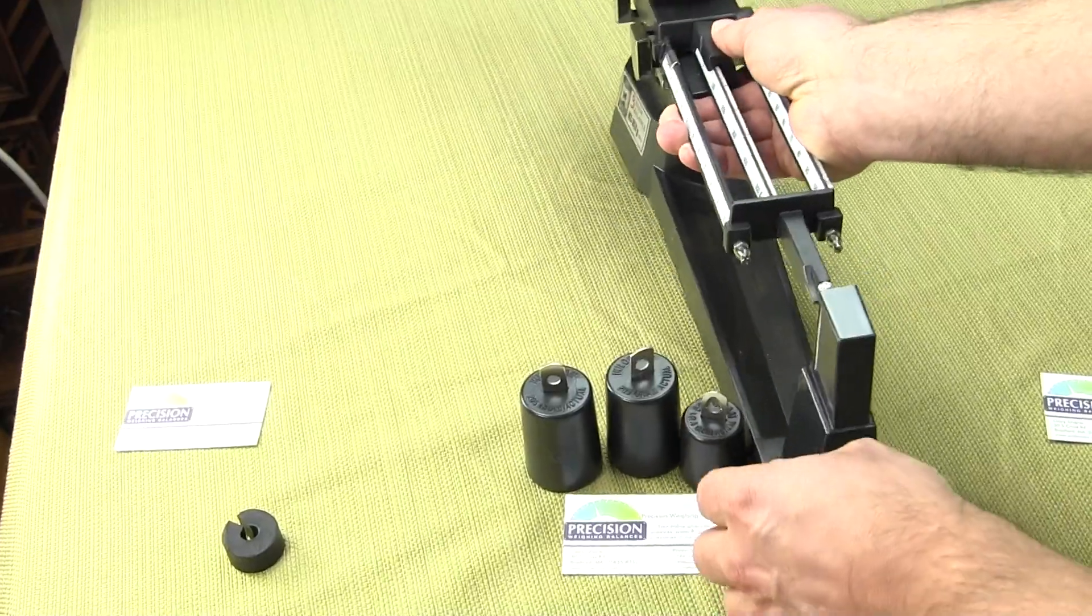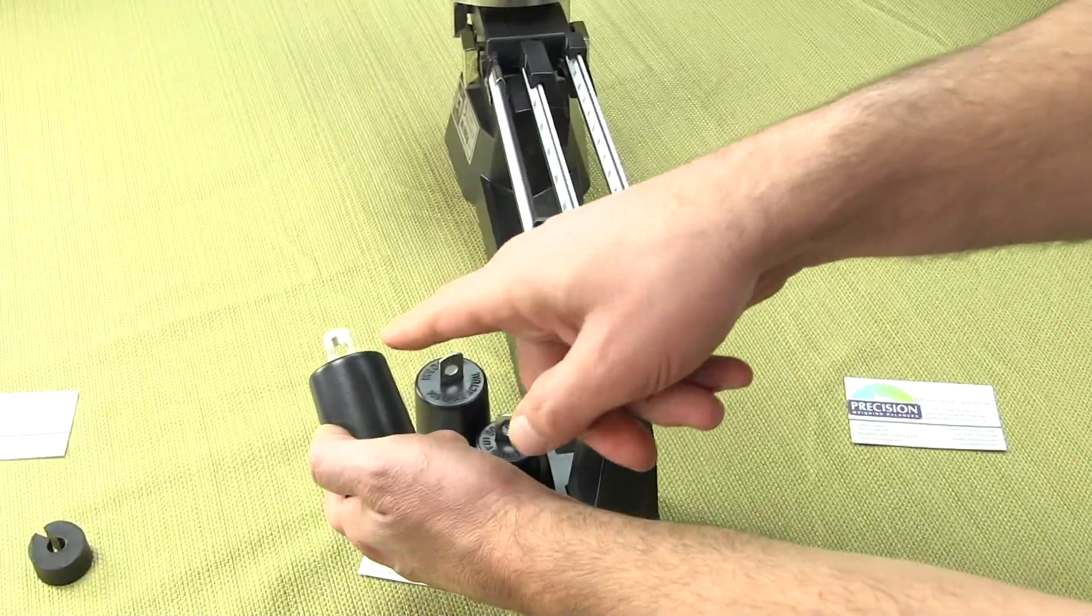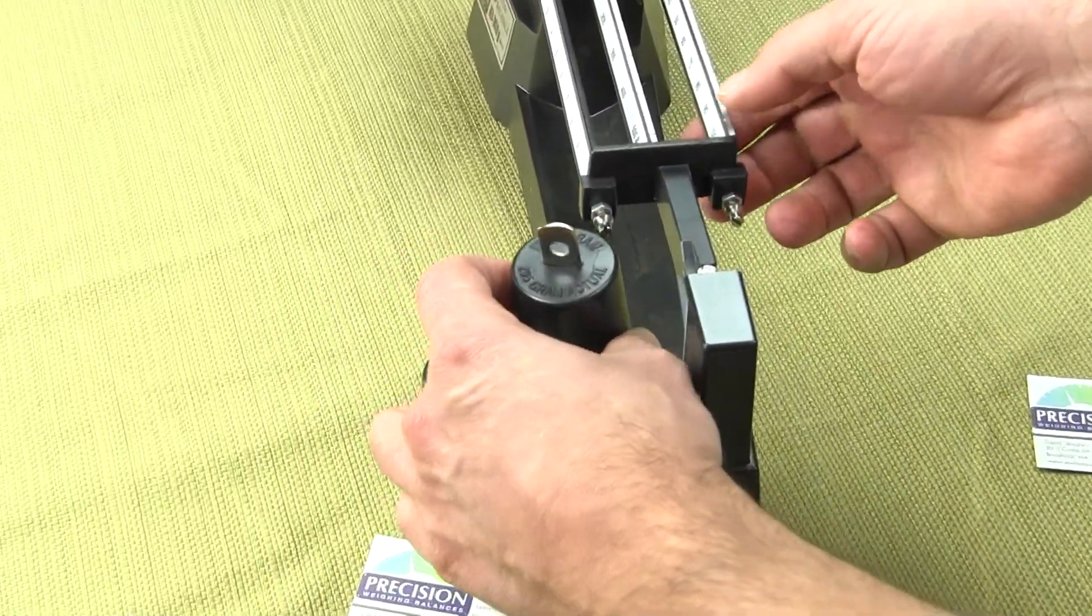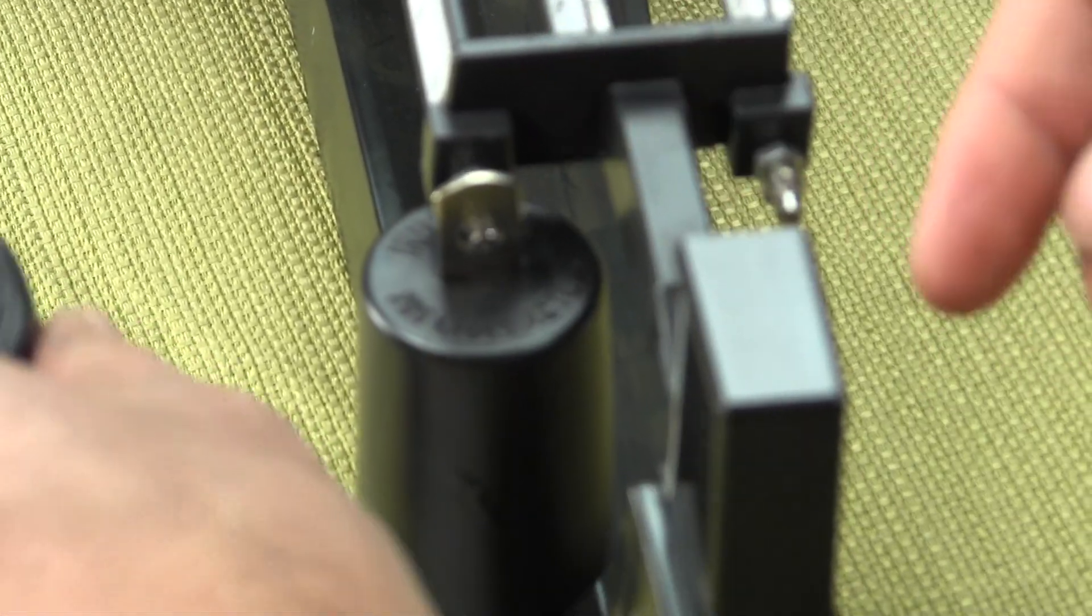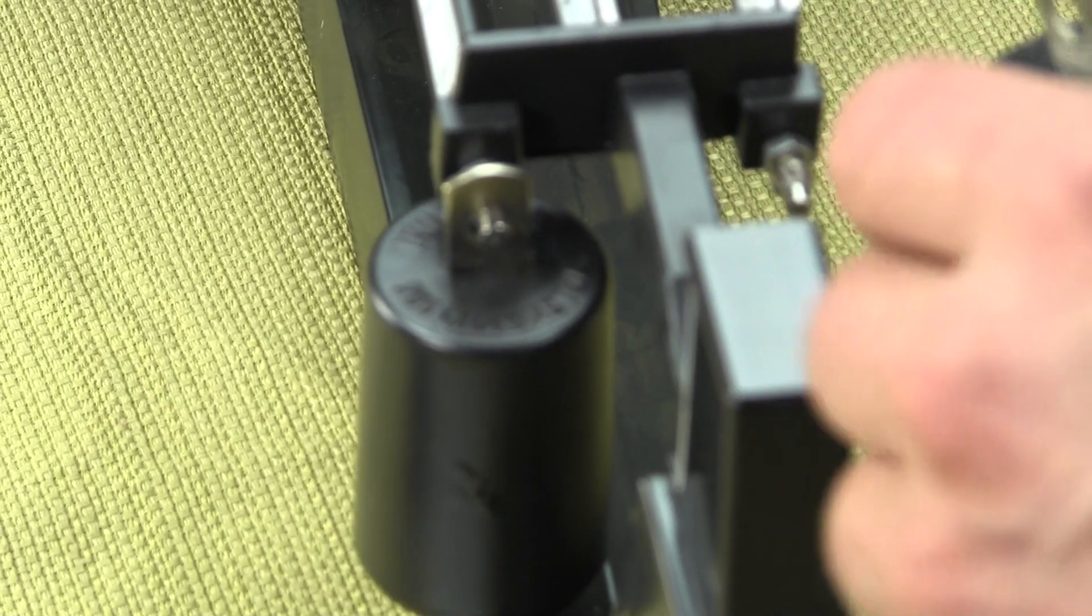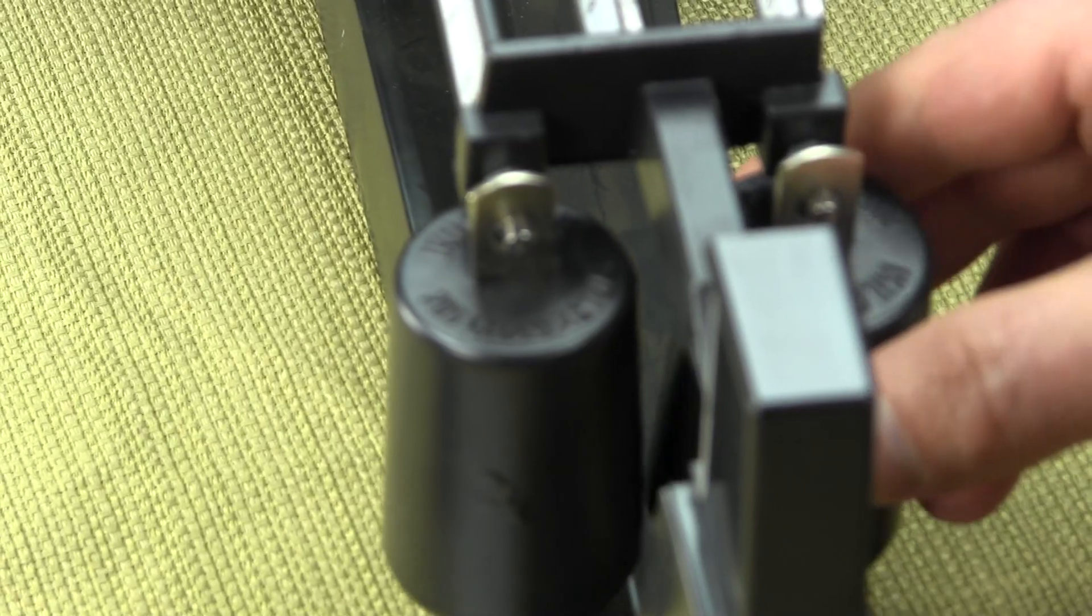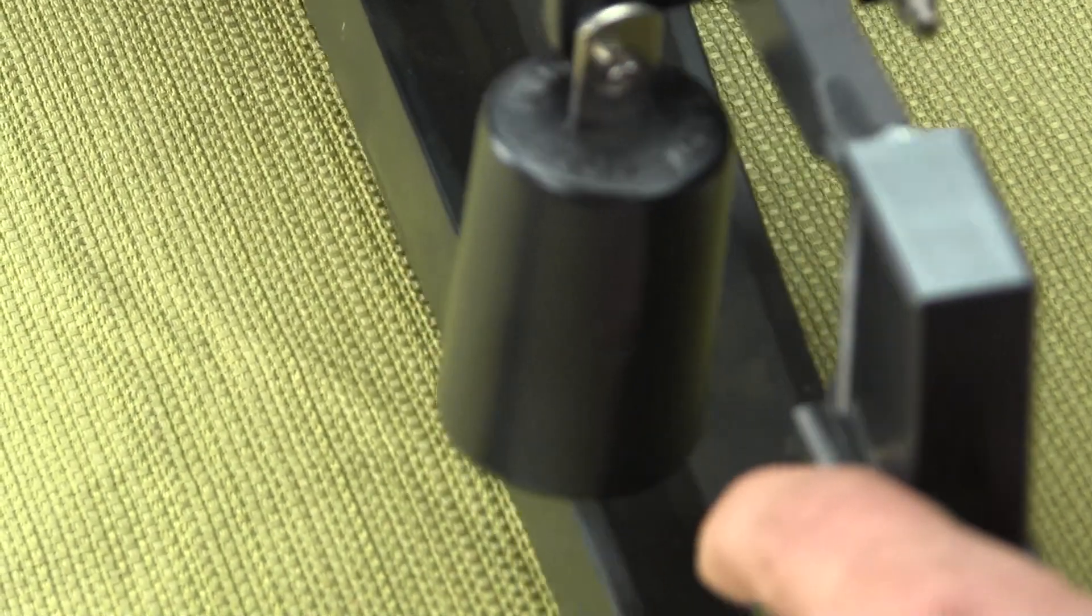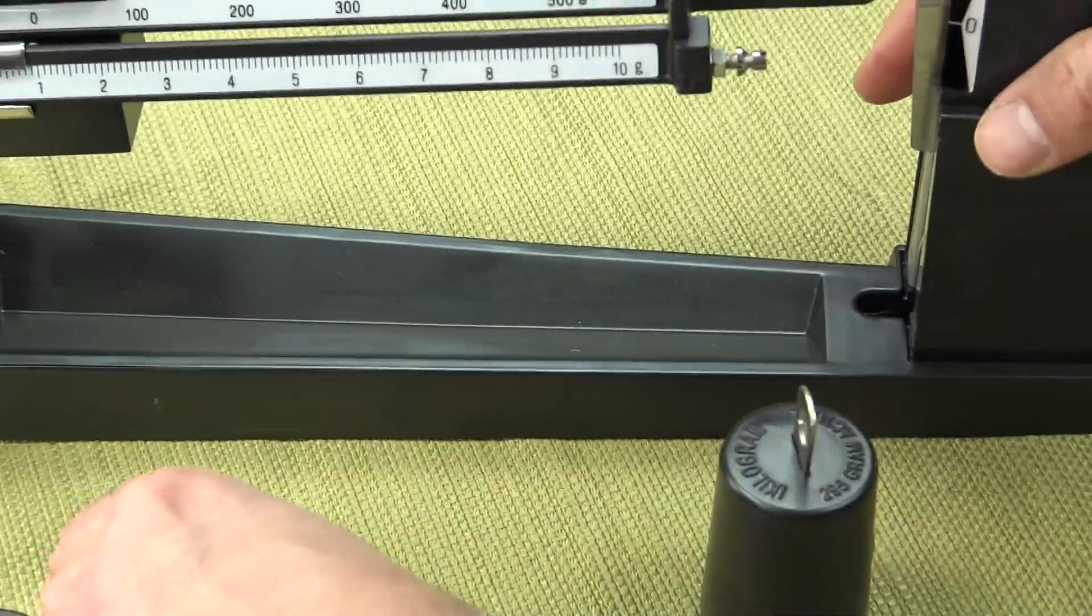These attachment weights go on the end of the beam itself. If we turn the balance, you'll notice that these attachment weights have been milled out. The attachment weights just fit right on the very end of the beam. If you were to put the 1,000, you'd be increasing the weighing capacity by 1,000 grams. You only can put two weights on. Even though you have three that it comes with, the most you can ever put on is two weights. We'll show you in this video how to use these weights.